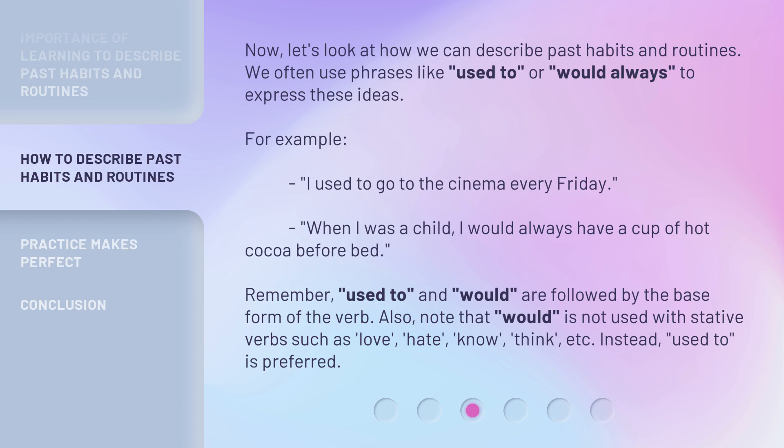For example: 'I used to go to the cinema every Friday.' 'When I was a child, I would always have a cup of hot cocoa before bed.' Remember, 'used to' and 'would' are followed by the base form of the verb. Also, note that 'would' is not used with stative verbs such as love, hate, know, think, etc. Instead, 'used to' is preferred.